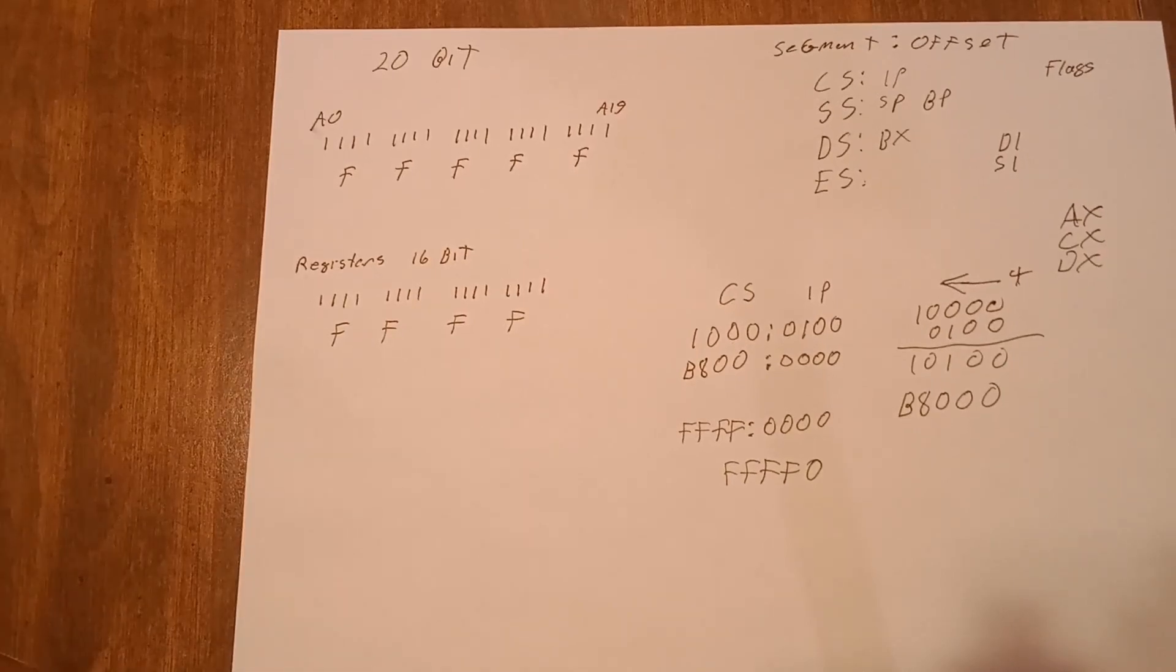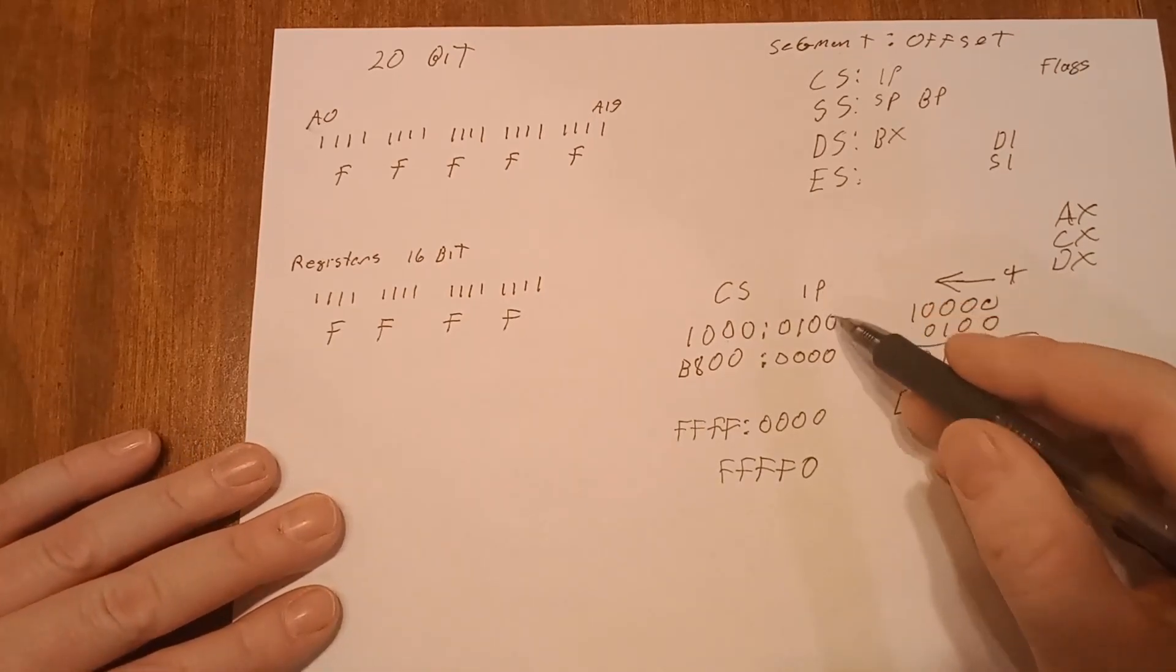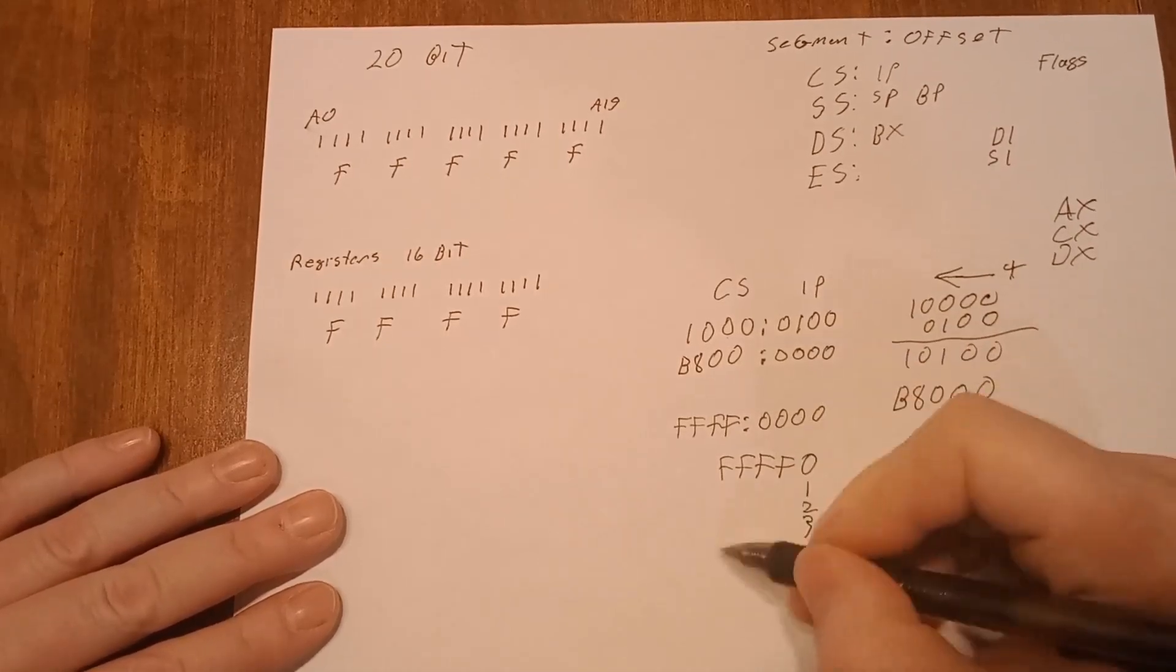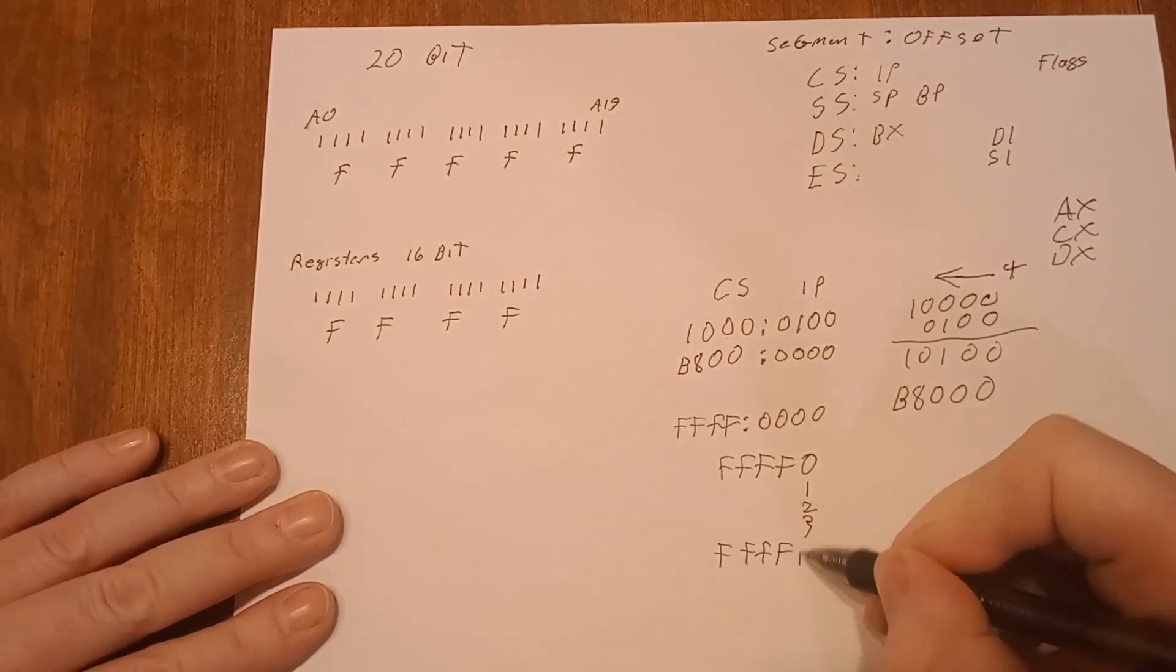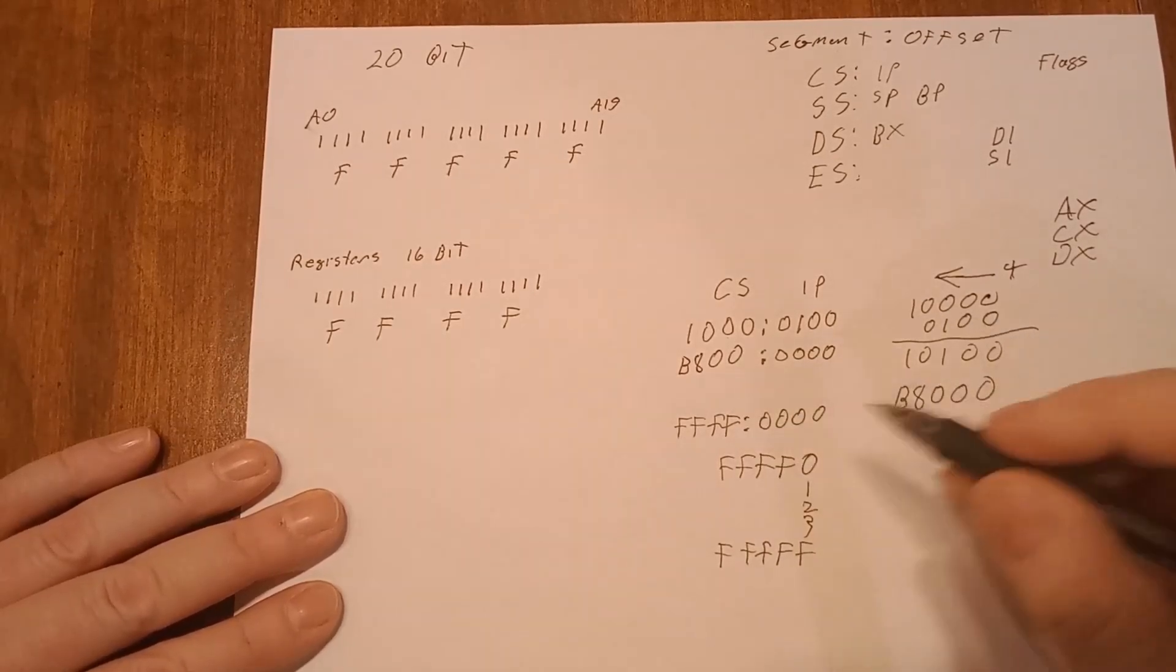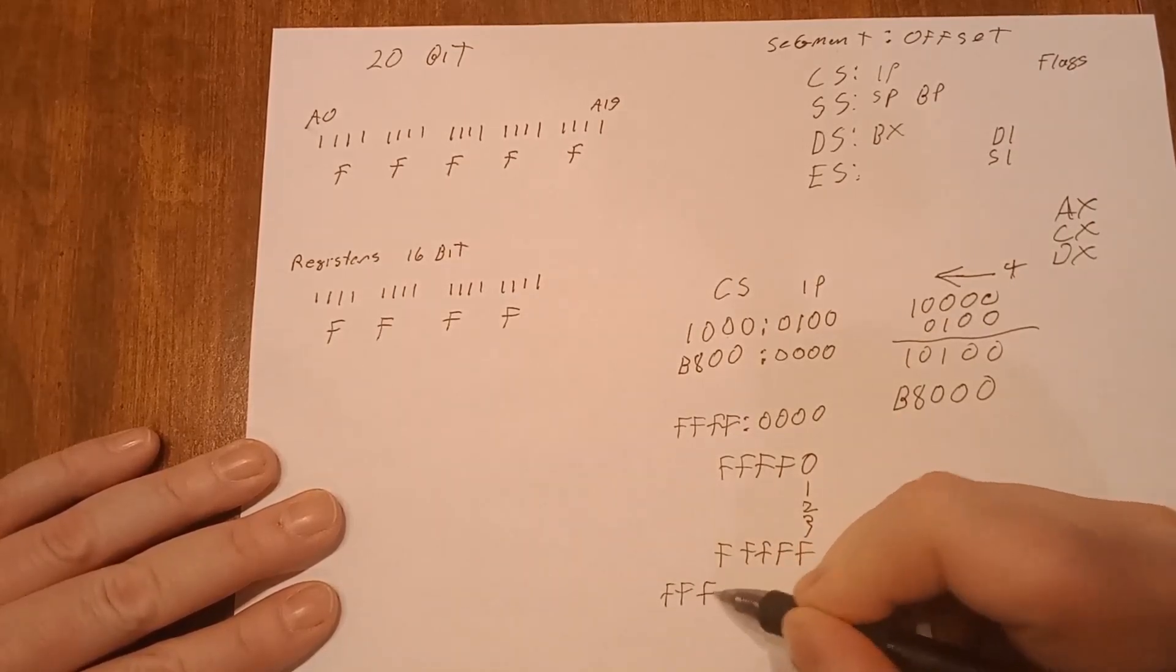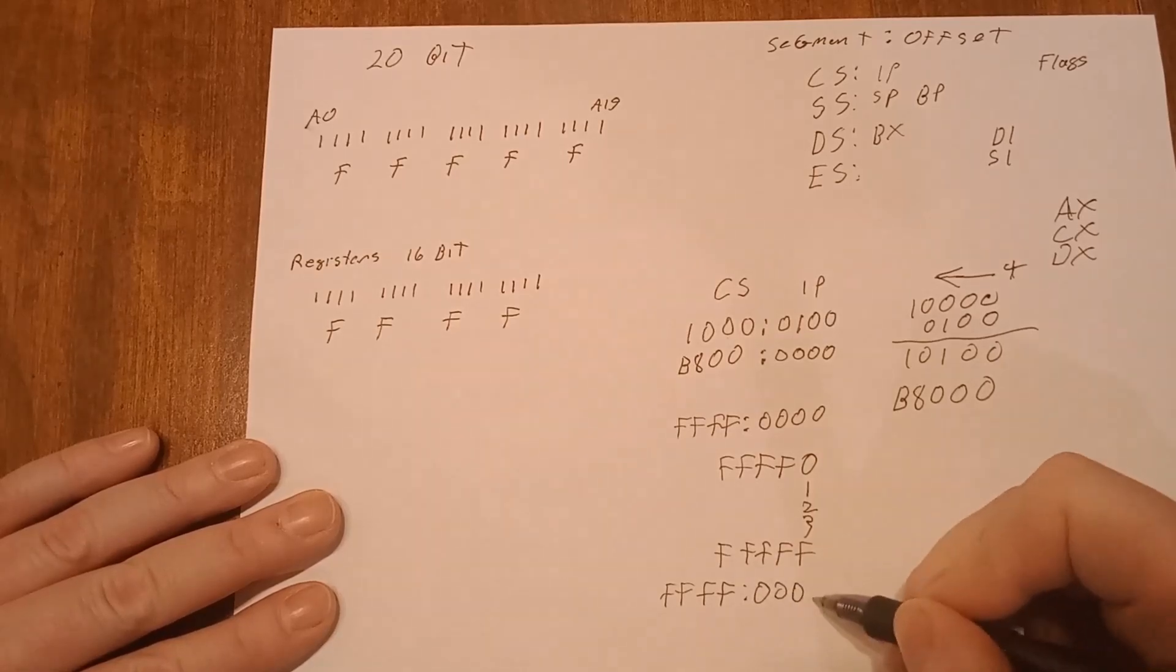Here's something to think about. As your instruction pointer increments up for your next instruction would be one, two, three, and so on, eventually you're going to get to address F F F F. And that would be simply your segment being F F F F and your offset being zero zero F.